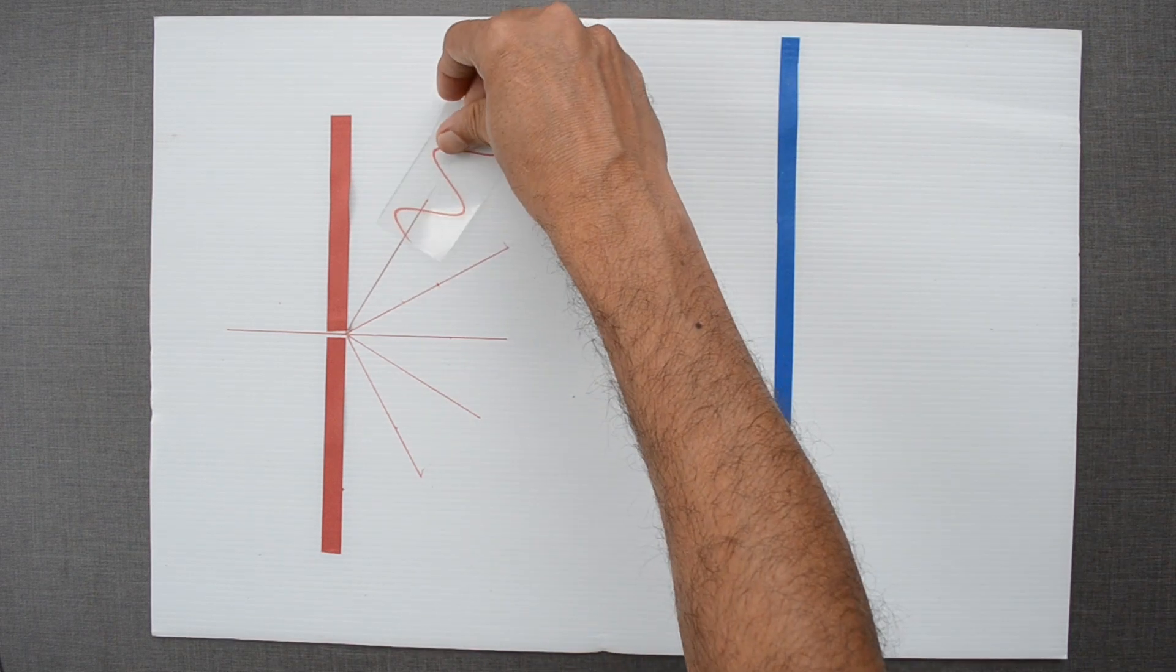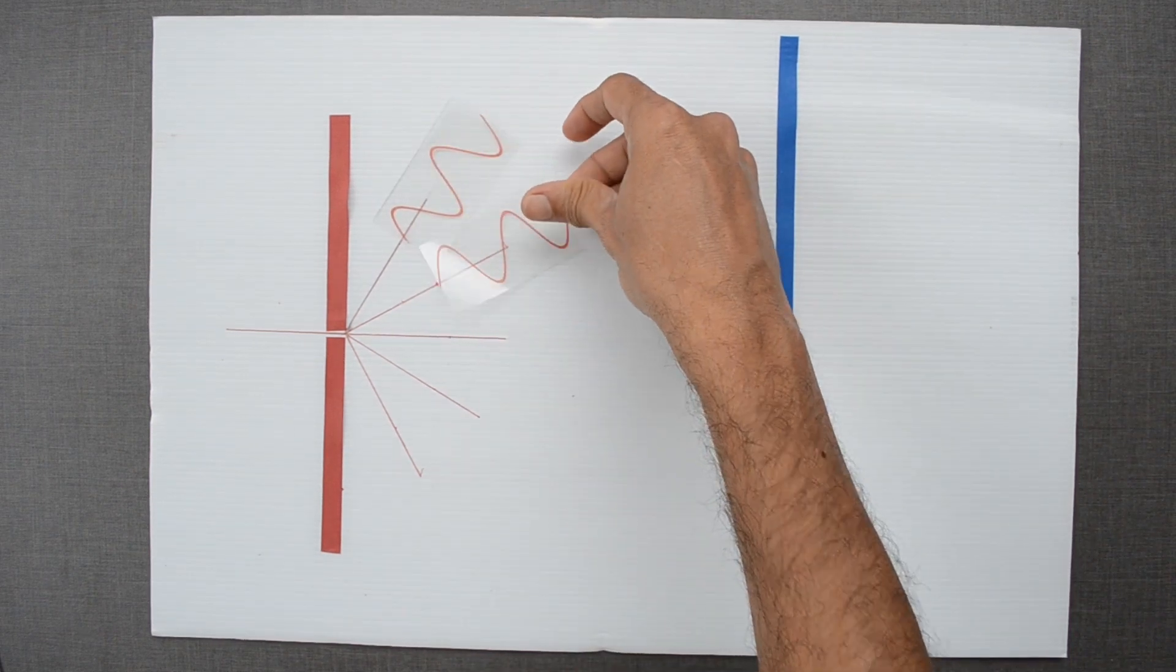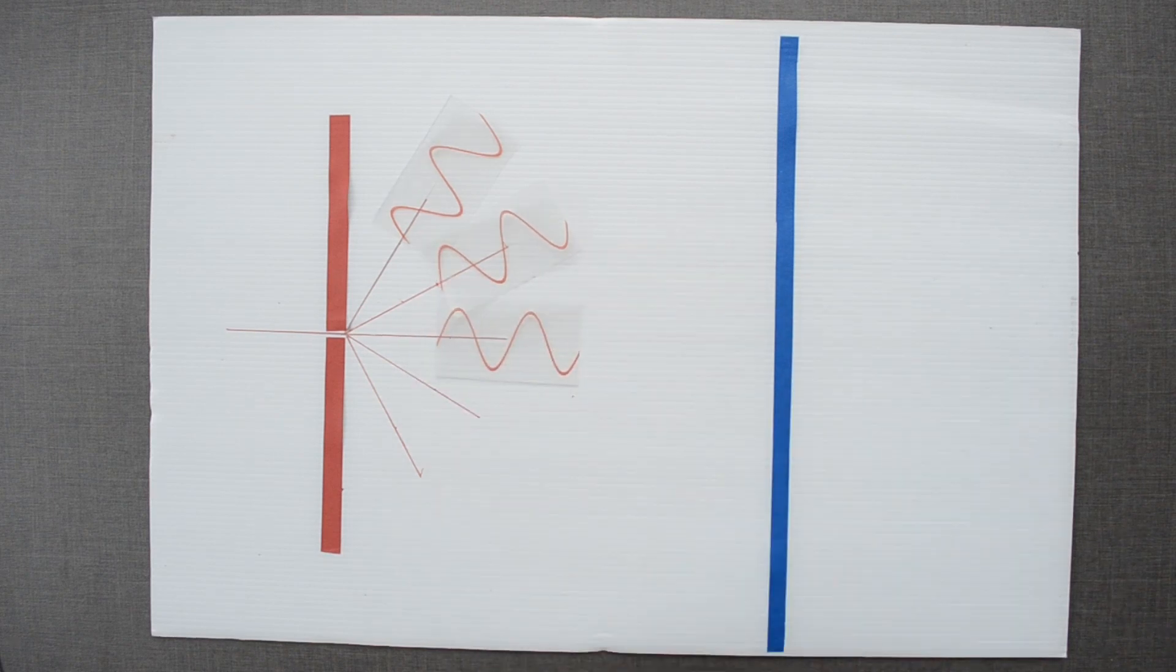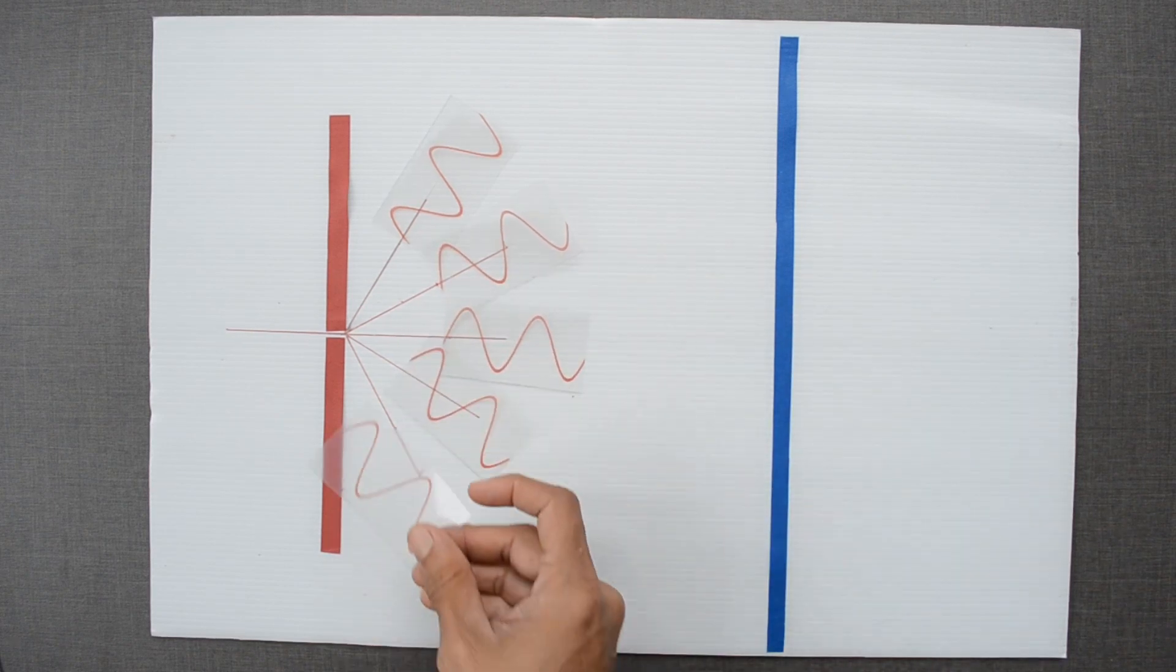When light from a laser comes out of the opening, it spreads out in all directions, just like a wave, instead of moving in a straight line.